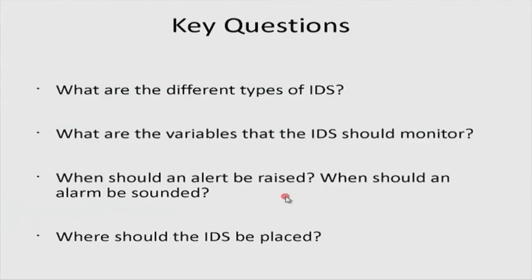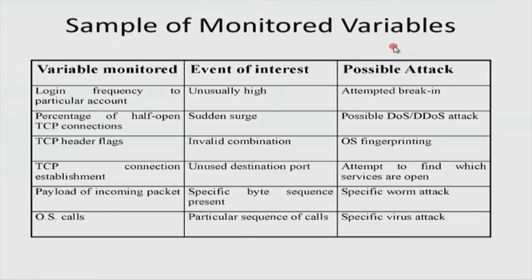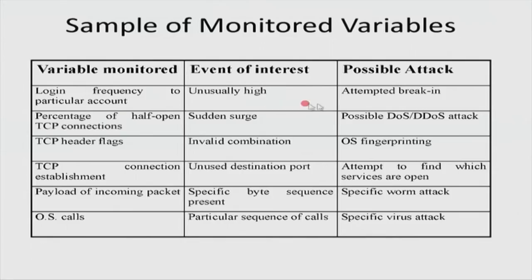Not only which variables, but what do you do with those variables — how do you convert data into useful information? When should an alert or alarm be raised? And where should the IDS be placed? Regarding which variables to monitor: consider the login frequency to a particular account. An unusually high frequency of logins to an account suggests a probable attempted break-in. What event of interest portends a denial of service attack, a worm attack, and so on?